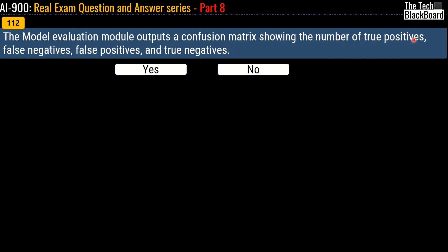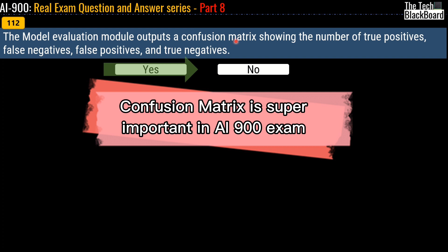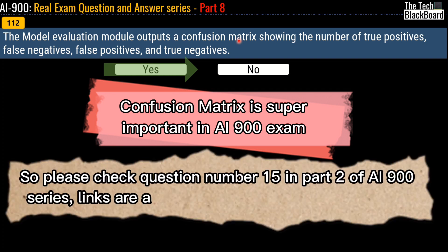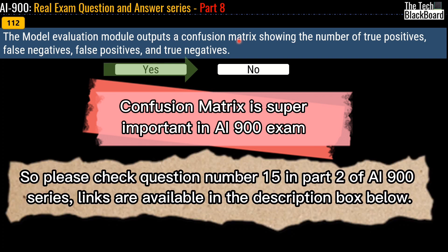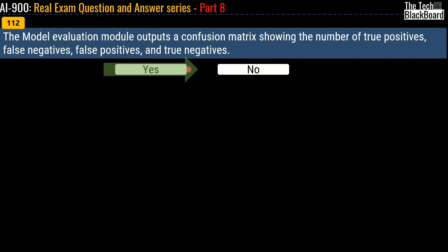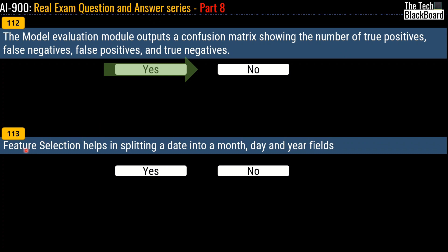Question 112: The model evaluation module outputs a confusion matrix showing the number of true positives, false negatives, false positives, and true negatives — the correct answer is Yes. Confusion matrix is a very important concept in the AI-900 exam and you will surely encounter questions on it. I have explained it in great detail in question number 15 of Part 2.